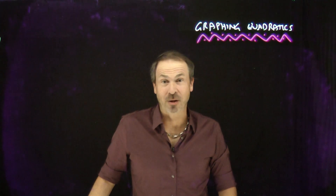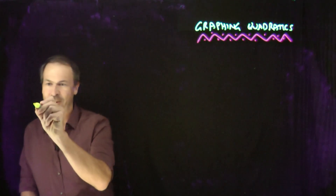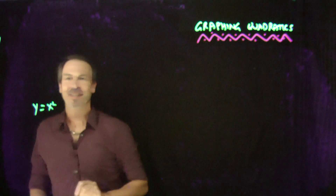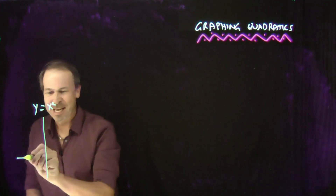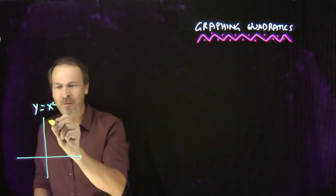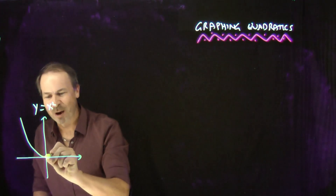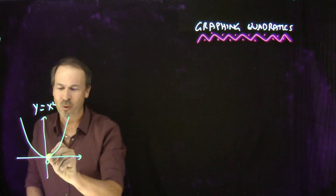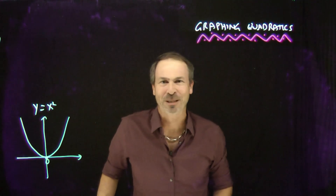We've been graphing quadratic equations. We started with this very simple one first: y equals x squared. When we graph this, it makes a beautiful symmetrical U-shaped graph centred at x equals 0. All the action is happening down there at x equals 0.